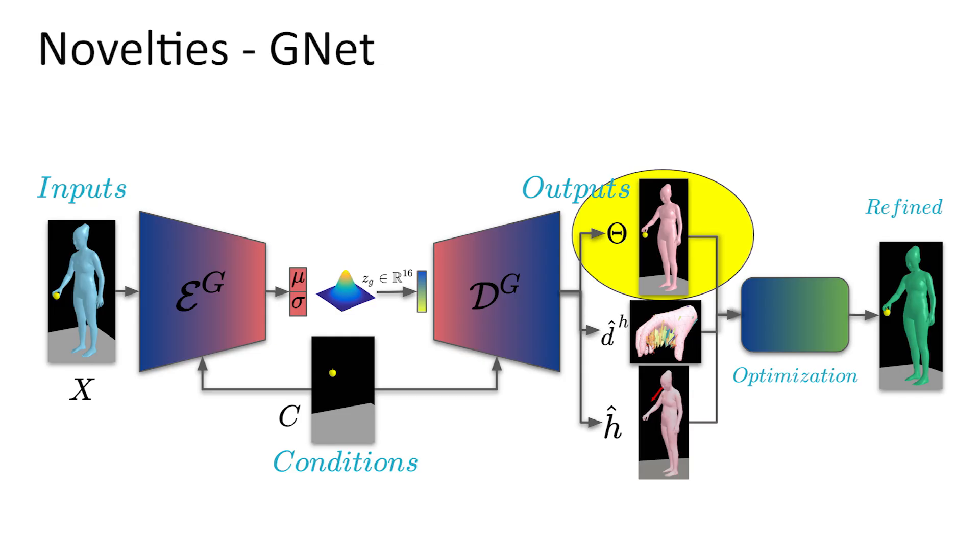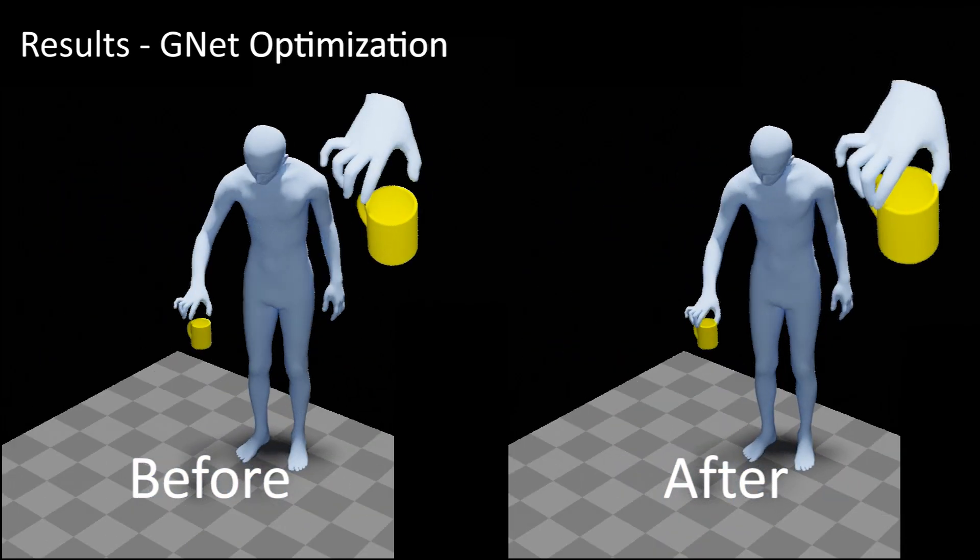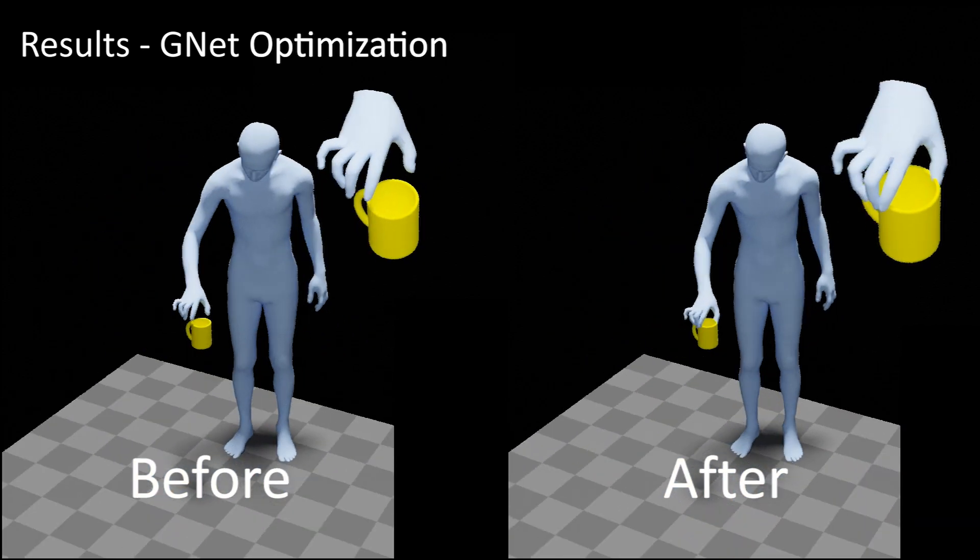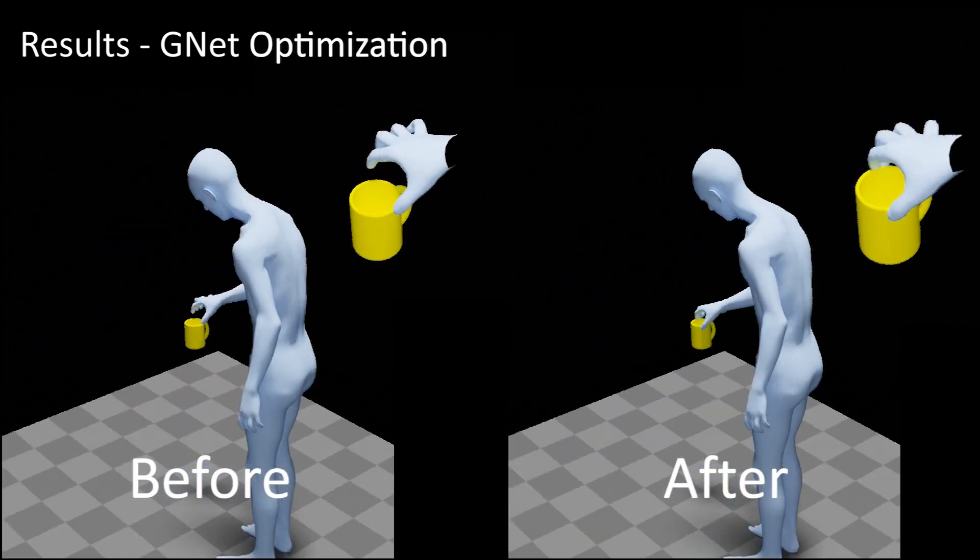In addition to SMPL-X parameters, GNet predicts two interaction features: 3D hand-to-object offset vectors and a head direction vector. We refine our SMPL-X parameters in an optimization step such that the features of the optimized pose more closely match the predicted interaction features. The results show an effective refinement after using the predicted interaction features as optimization constraints.